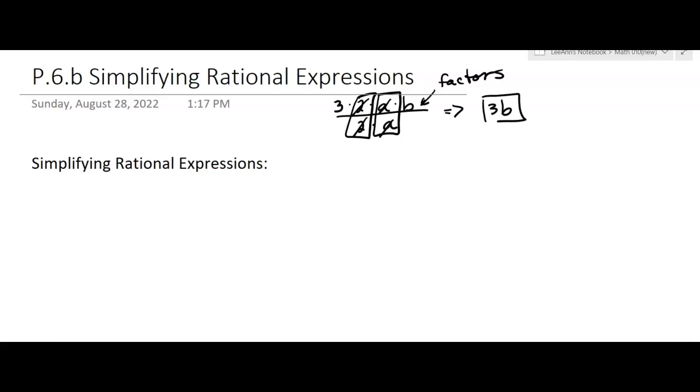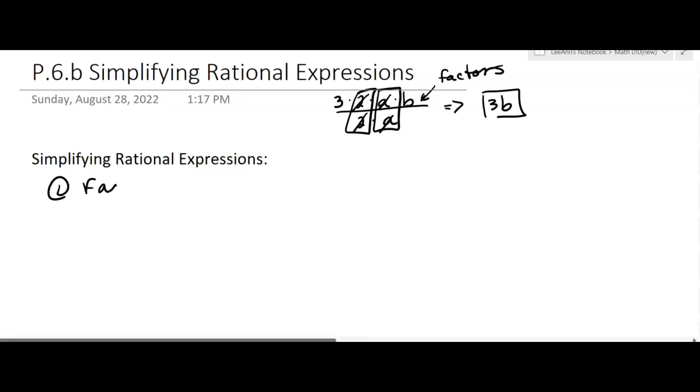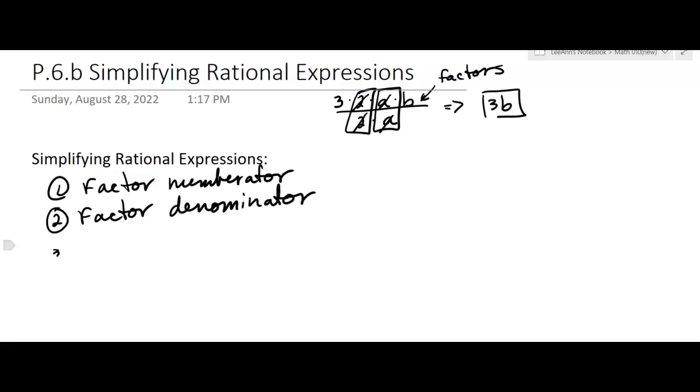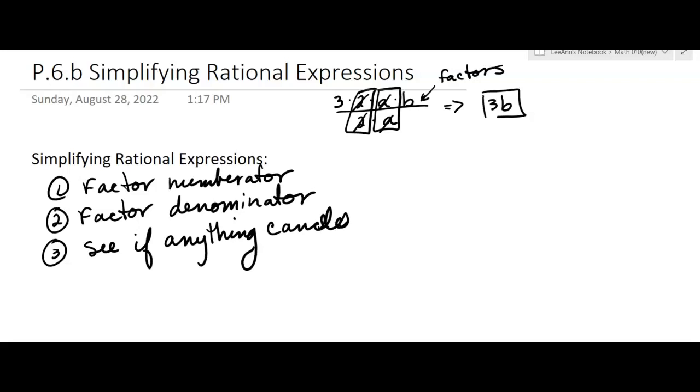Well that's the same thing we're going to do, only a little bit bigger in terms of rational expressions. So there's basically 3 steps. You have to factor the numerator, meaning get it into multiplication. You have to factor the denominator. And see if anything cancels. That's the kind of 3 steps there.